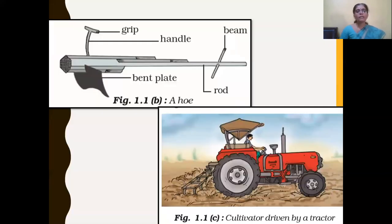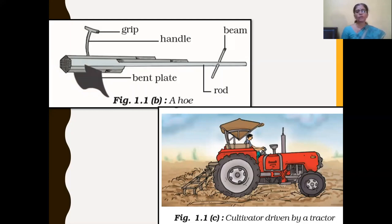The plow was replaced by the hoe, which is also used for plowing. It is similar to the plow, but the wooden part is replaced by an iron rod. One end of the rod is attached with a triangular bent plate which acts like a knife to loosen the soil, and the other end is attached to a beam of wood kept on the bullock's shoulder.